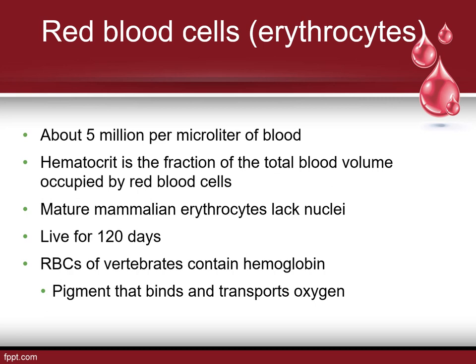Red blood cells are our erythrocytes. There are about 5 million per microliter of blood — quite a lot, making up anywhere from 40 to 50 percent of your blood. The main reason is that they contain hemoglobin, a molecule that binds four molecules of oxygen to each one, transporting oxygen throughout the body. They can live for about 120 days, so we're making new red blood cells and losing red blood cells pretty much constantly. Hematocrit is the fraction of the total blood volume occupied by red blood cells.